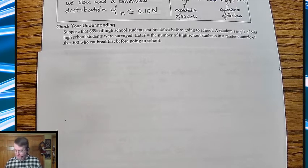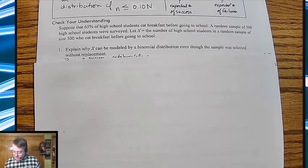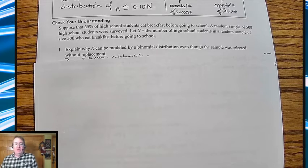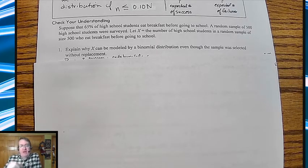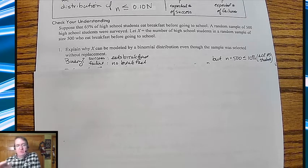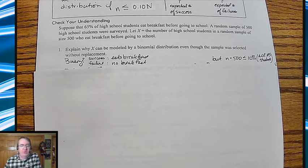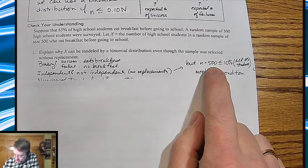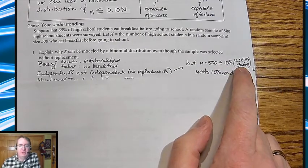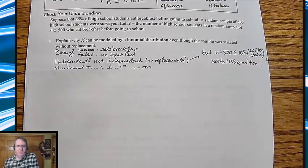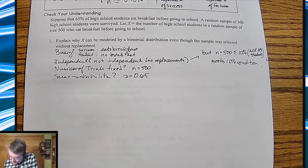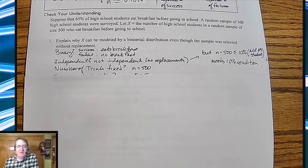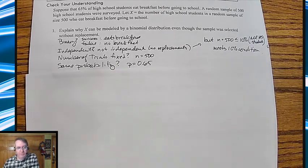Hey, glad you kept going. So explain why X can be modeled by a binomial distribution even though the sample was selected without replacement. Now, you still have to satisfy the B, the N, and the S. Just because you don't have independence, you still have to satisfy all of the rest. So we still have success as eating breakfast, failure is no breakfast, so it's the binary group. Independence, while it's not independent because there's no replacement, it does fit the 10% condition because 500 is less than 10% of all high school students in the nation. At least I hope there's more than 5,000 of you. And then from here, number of trials fixed is 500 and then obviously the probability is 65%. So we can treat it.